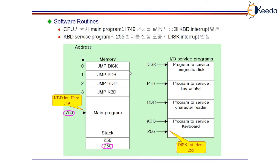For that, the CPU is going to use a special bit. Right after each pointer, there will be a special bit. The special bit will be equal to 0 if the device is not interrupting, and equal to 1 if the device is interrupting. By examining the special bit, the CPU is going to either jump to the specific routine or go to the next pointer for the next service routine. This is how the CPU examines each and every pointer to determine which device is currently interrupting, then jumps to the appropriate service routine. Once that specific routine is executed, the device is said to be completely serviced. These are the software routines.